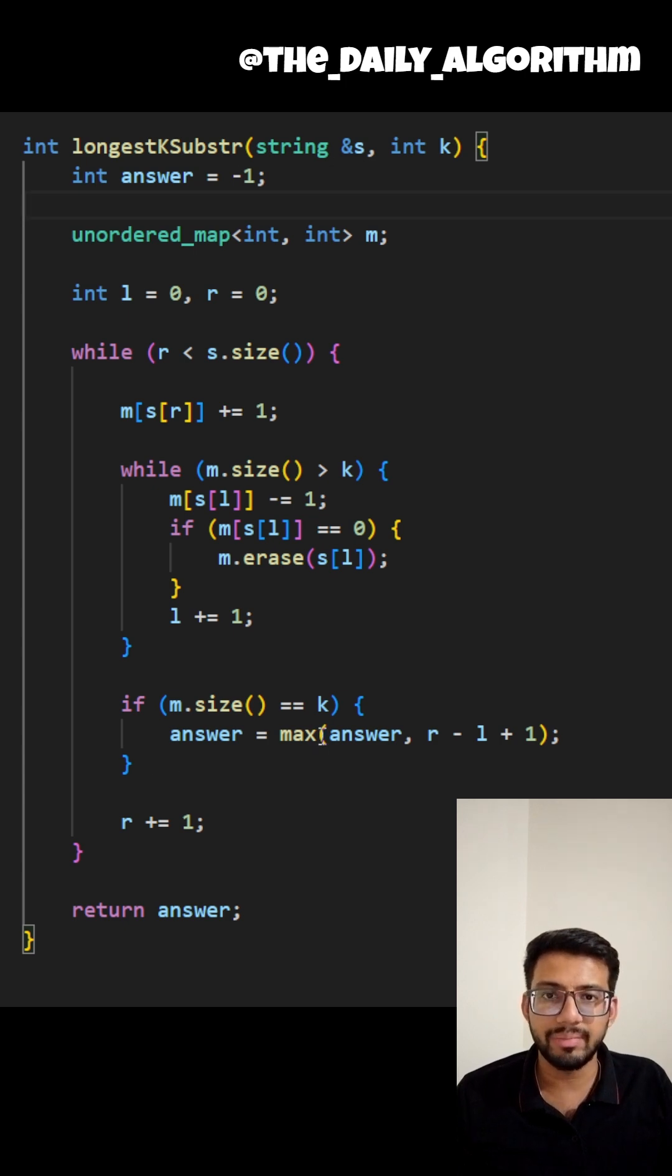Now, I'm also checking if the size of the map is equals to K. In that case, I'm maximizing my answer. And at the end of it, I'm returning my answer.